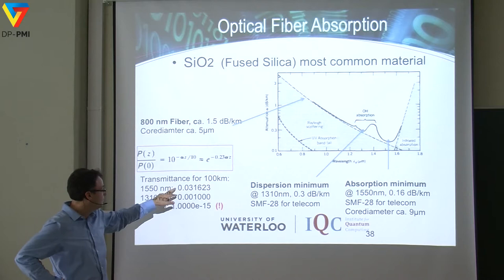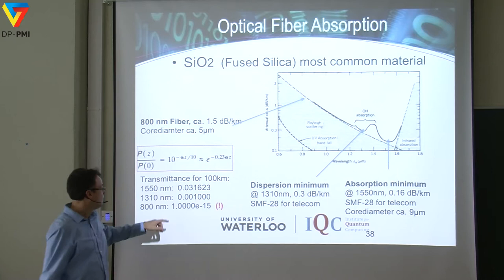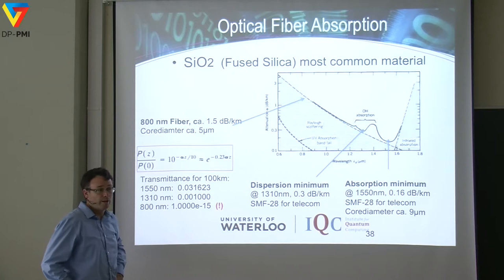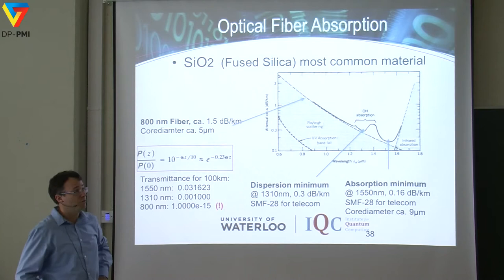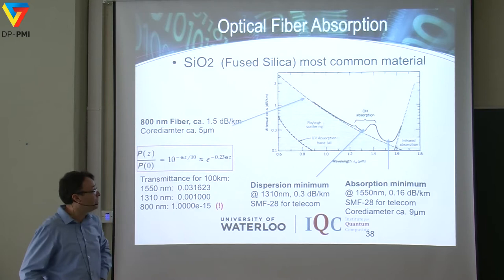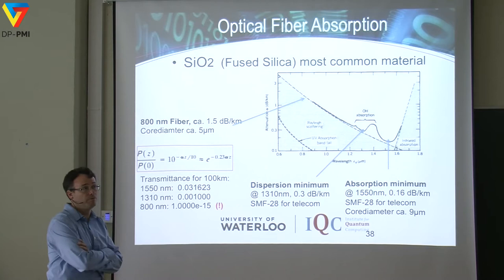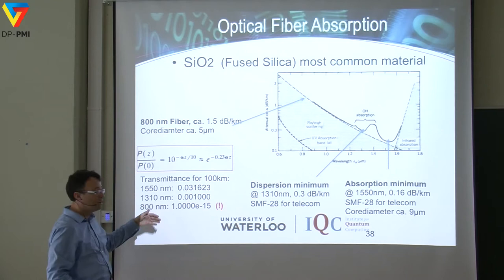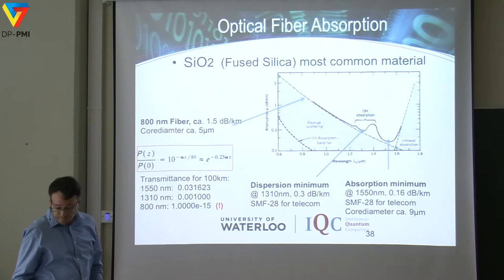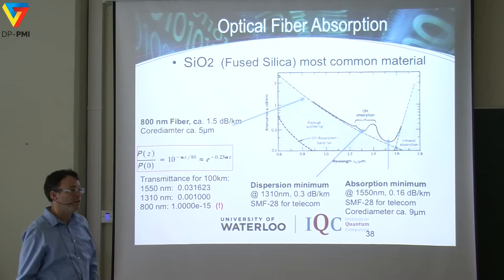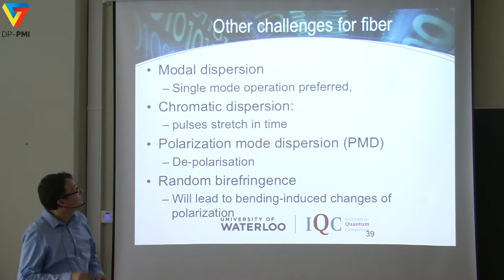For transmission, 1550 nm is the way to go for fiber optic transmission. However, for detection, 800 nanometers is much better because we can use silicon detectors. Unfortunately, there's always this trade-off one has to make in the lab when designing such a system.